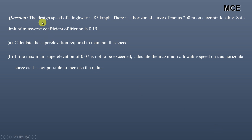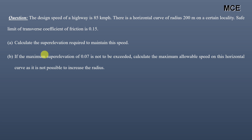The question states that the design speed of a highway is 85 km per hour. There is a horizontal curve of radius 200m on a certain locality. The safe limit of the transverse coefficient of friction is 0.15. We have to calculate the super elevation required to maintain this speed, and also, if we are restricting the super elevation to a value of 0.07, we have to find the maximum allowable speed on this horizontal curve if it is not possible to increase the radius.